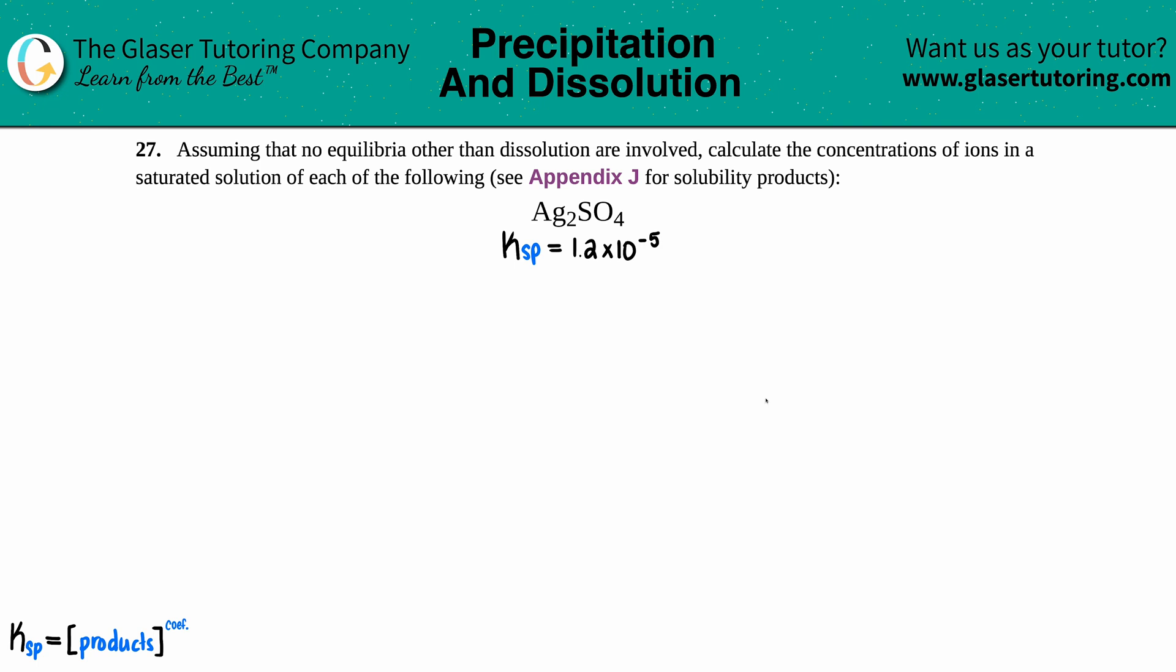Number 27. Assuming that no equilibria other than dissolution are involved, calculate the concentration of ions in a saturated solution of each of the following. Then see Appendix J for the solubility products, which is exactly what I did. We want to know what the concentration of the ions are in silver sulfate, Ag₂SO₄. So I had to go in the back of a textbook to find out what that Ksp value is for silver sulfate: 1.2 times 10 to the negative fifth.